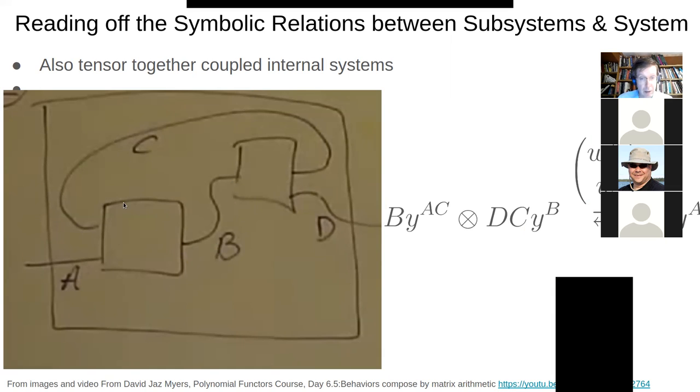this is B times Y to the AC, because these two are inputs and this is the output. And these two are tensored together because they run concurrently. There's coupling between them, but they run concurrently. And they lead to an overall thing where it's D out in A in, and hence something like this.